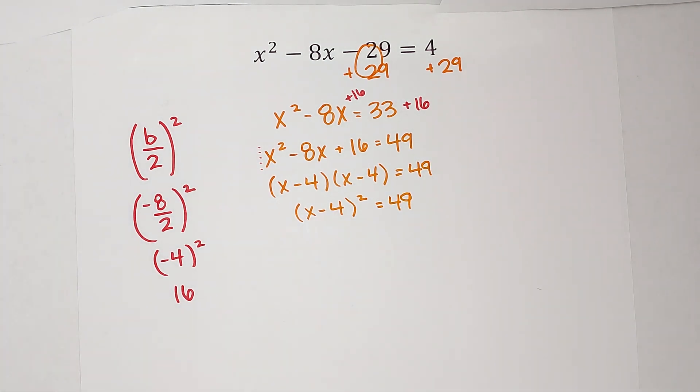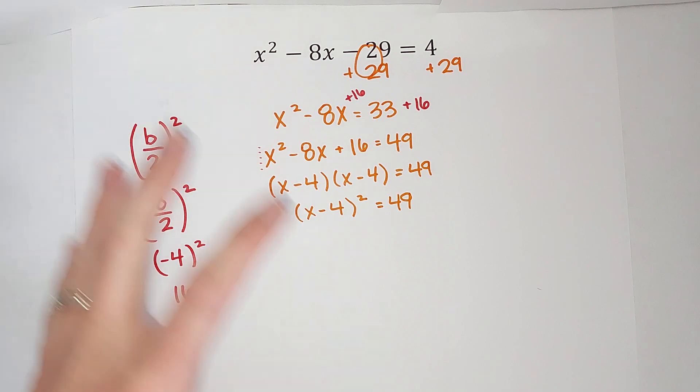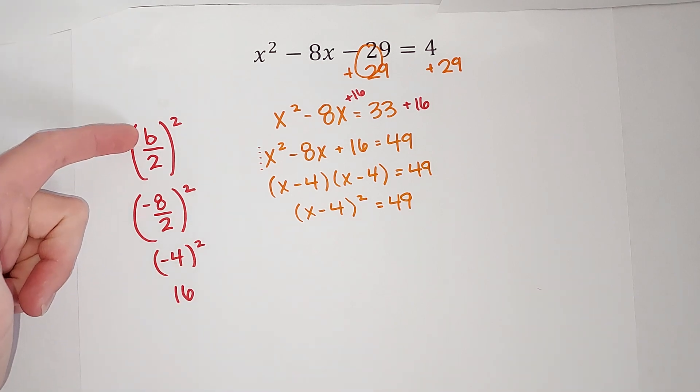Now as you do this more and more, you'll probably get used to the fact that when I factor it, I know it's gonna be the same parentheses. And guess what, that negative 4 was the b divided by 2. If you want to go on and factor it like normal, that's great, but you probably will start to notice that pattern.